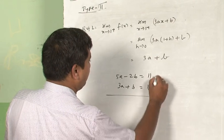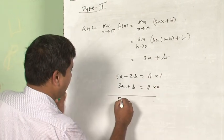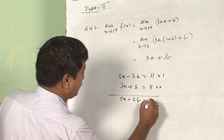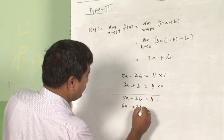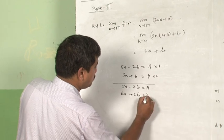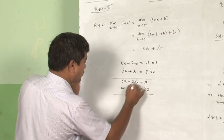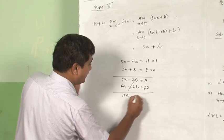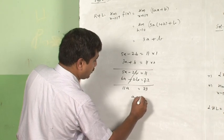Now let us go for elimination process. 5A minus 2B is equal to 11, and of course 6A plus 2B is equal to 22. And resulting these two are getting cancelled, it is 11A is equal to 33, and A is equal to 3.